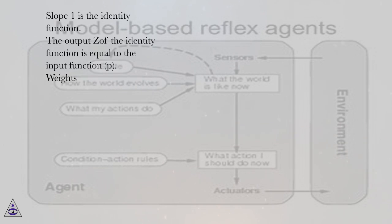Slope 1 is the identity function. The output z of the identity function is equal to the input function, p.